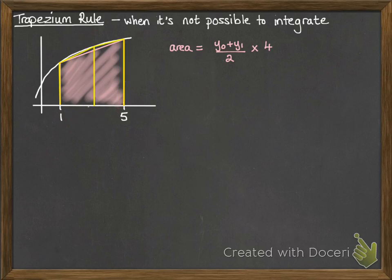Now we can make this a better approximation if we actually do it with two trapezia. So here we've split it into three lengths that we need to consider for our two trapezium: y0, y1, y2. And so our area now will be the first trapezium plus the second.